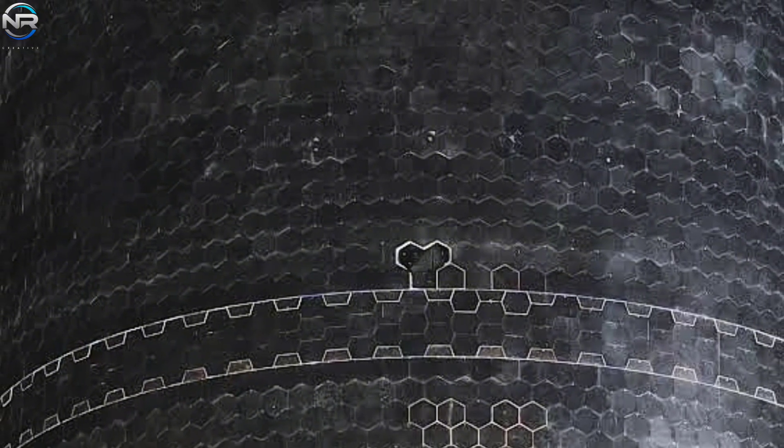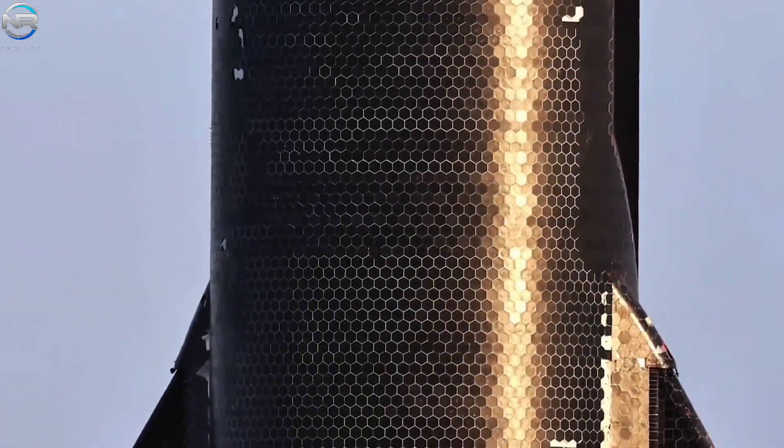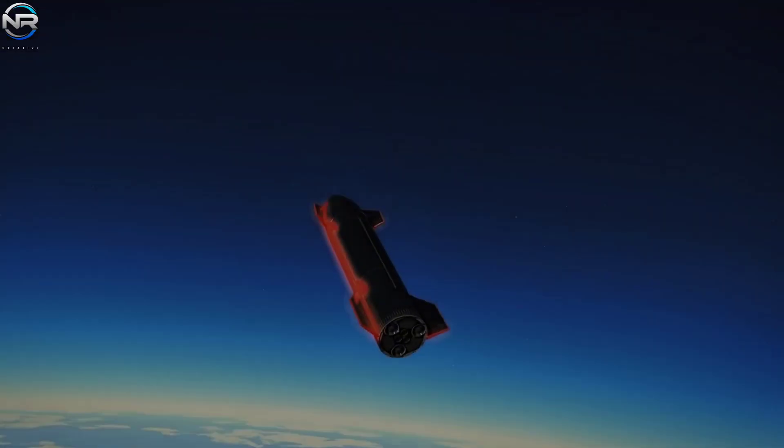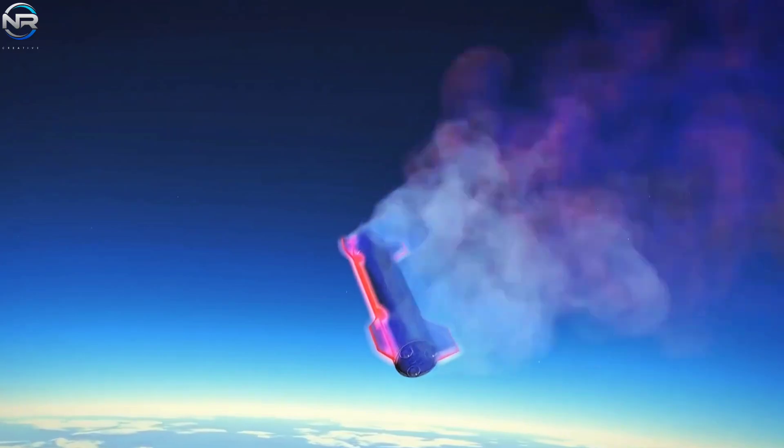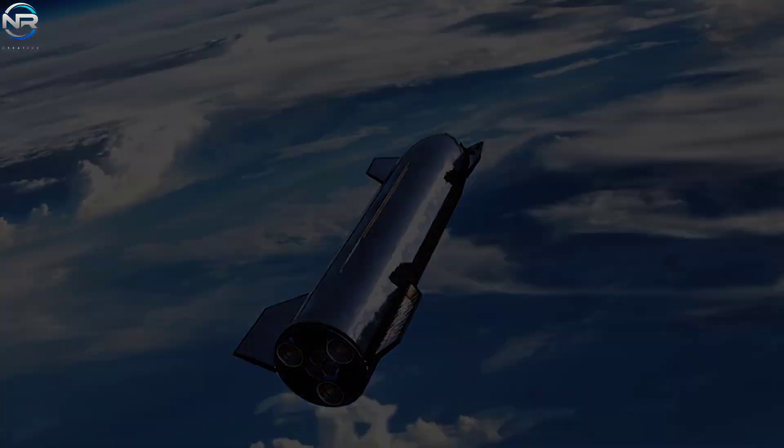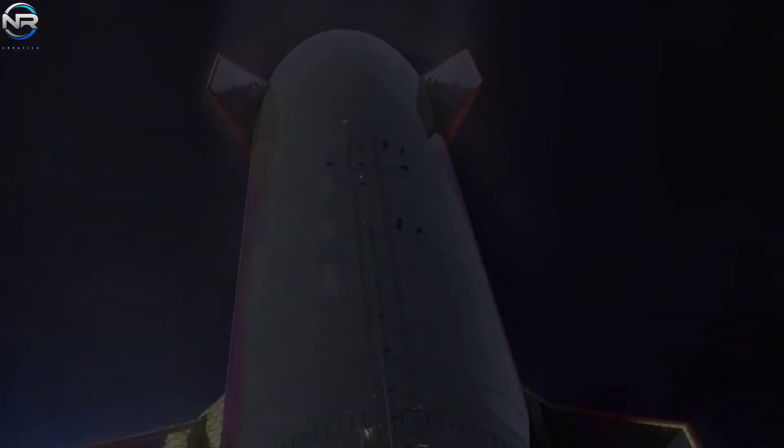In addition to these changes, SpaceX will likely retain some improvements from the previous flight that haven't been fully tested yet. One such change involves rounding and narrowing the edges of the tile lines across the entire surface of the spacecraft. This design was chosen because hot spots were observed during re-entry on the previous flight. This change likely relates to the white lines now visible between the tiles, as both are designed to make the exterior more heat-resistant.